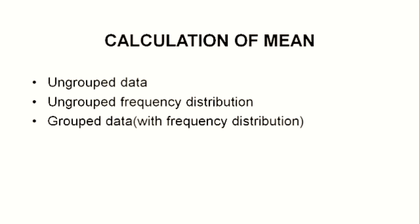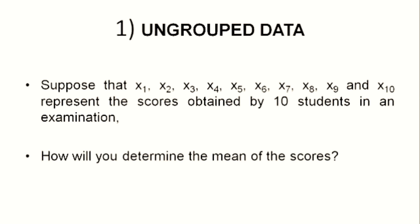Mean can be calculated in three different situations. First, it can be calculated for ungrouped data. Second, it can be calculated for ungrouped frequency distribution. And in the final case, mean can be calculated for grouped data, which means you are given a frequency distribution and we need to find the arithmetic mean. For Case 1, if we have ungrouped data, suppose that x1, x2, x3, x4, x5, x6, x7, x8, x9, and x10 represent the scores obtained by 10 students in an examination — how will you determine the mean?